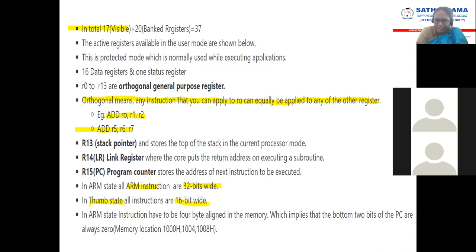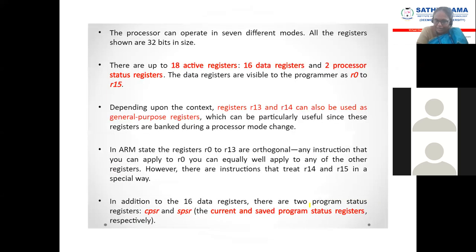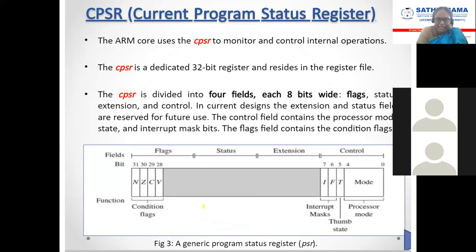Looking at the ARM7 register layout: R0 to R12 are normal general-purpose registers. R13 — SP stands for Stack Pointer. LR is the Link Register. PC is the Program Counter. CPSR is the Current Program Status Register. So the same things we have listed out. Now we will enter into CPSR — how CPSR is structured.